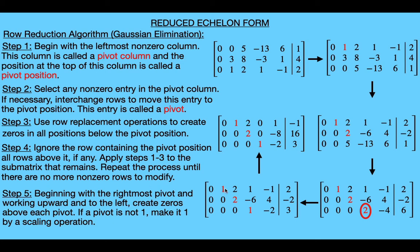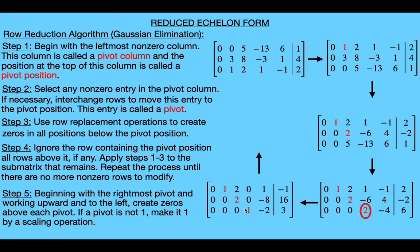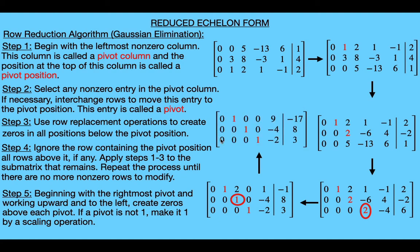Still on step five, we replace the matrix with the updated one and work up and to the left to the next pivot. Since this pivot is not one, we multiply every entry in that row by one-half to get a new row two. Then we use this pivot to create a zero above it by replacing the first row with the sum of itself and negative two times the second row. The resulting matrix is now in reduced echelon form.